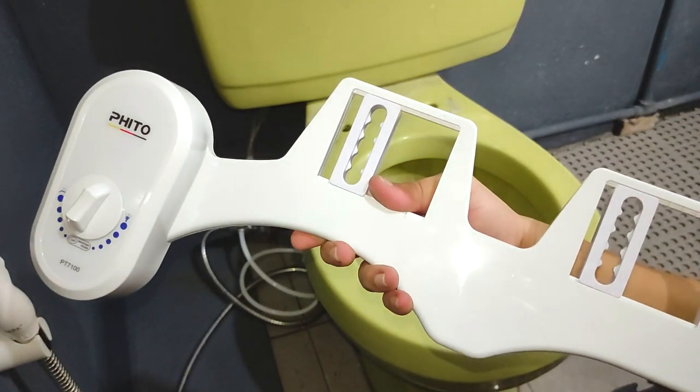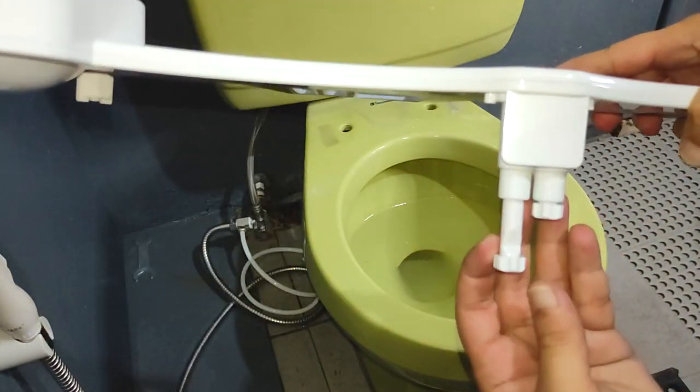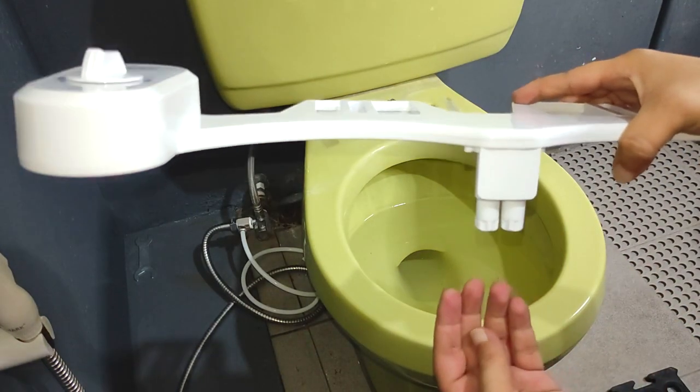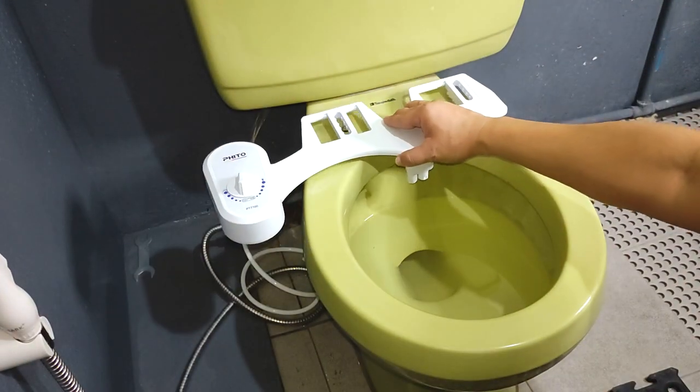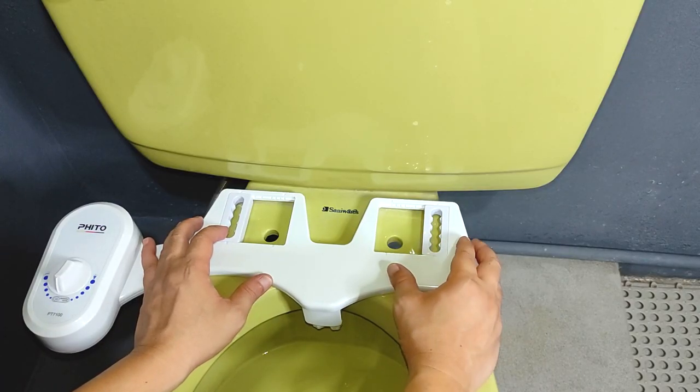Now it's time to mount this toilet seat bidet. Obviously the right orientation is with the holes of the nozzles facing outwards away from the bowl like so. Adjust the position of the assembly so that it's at the center of the bowl.